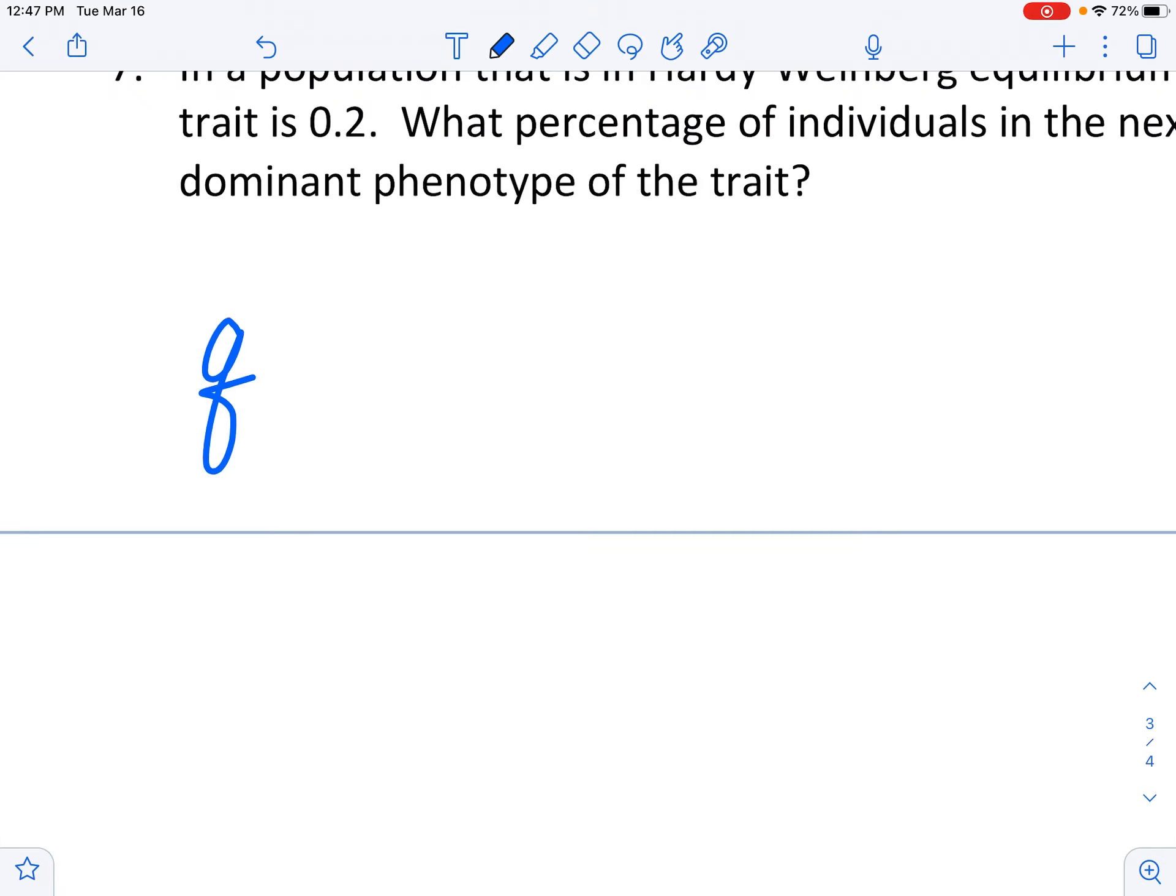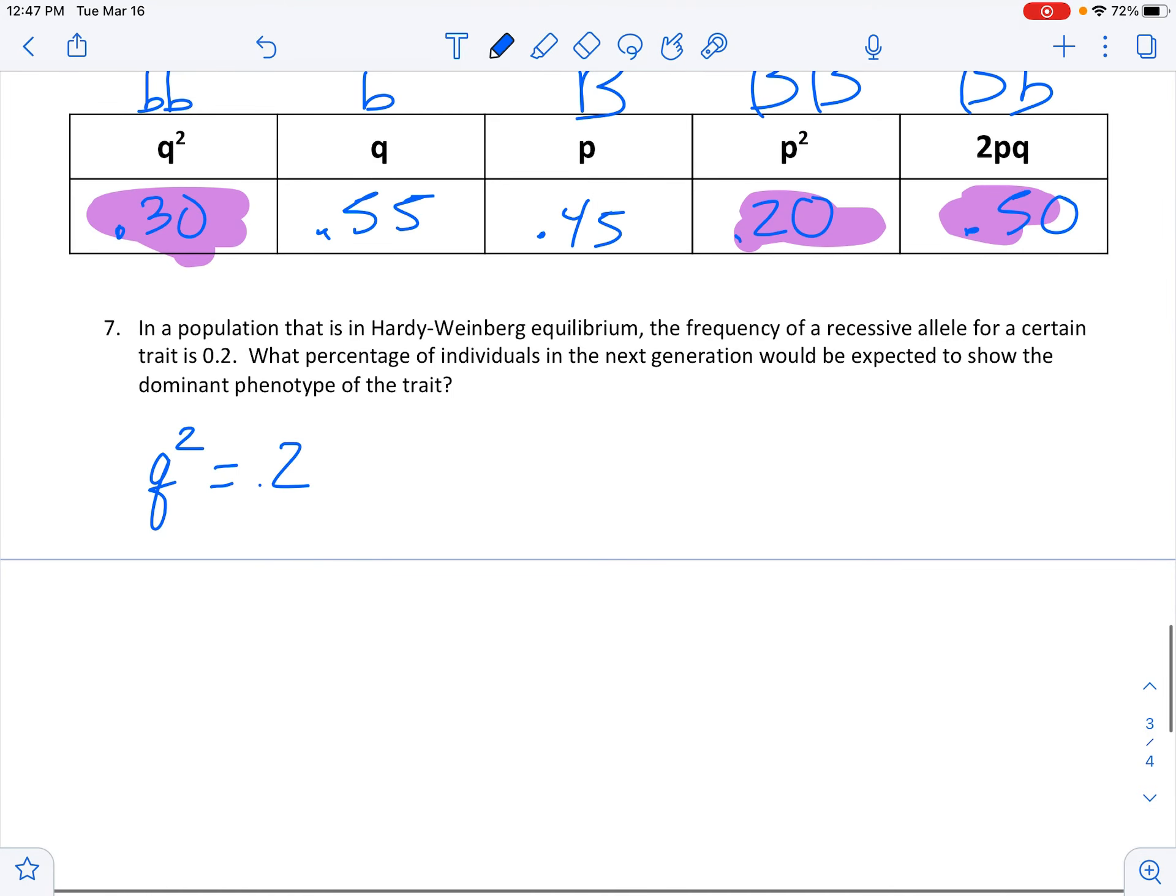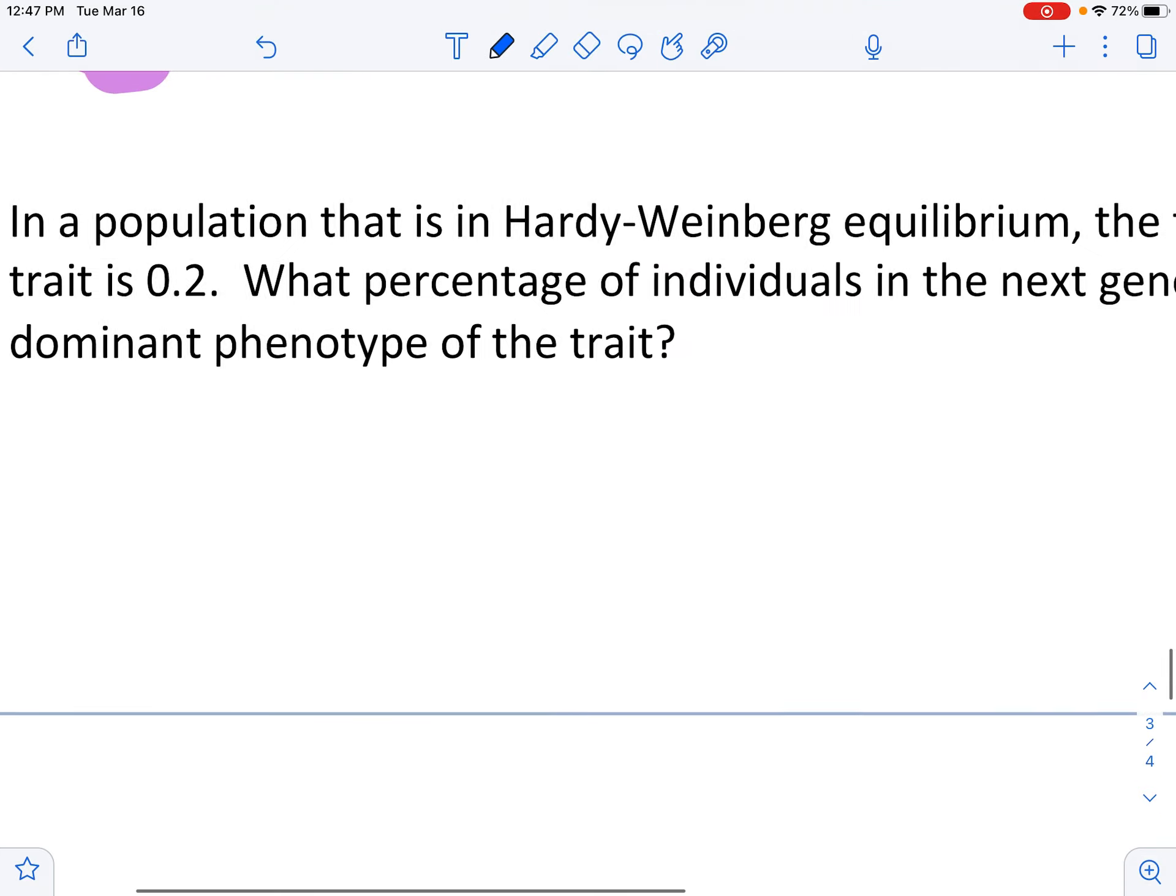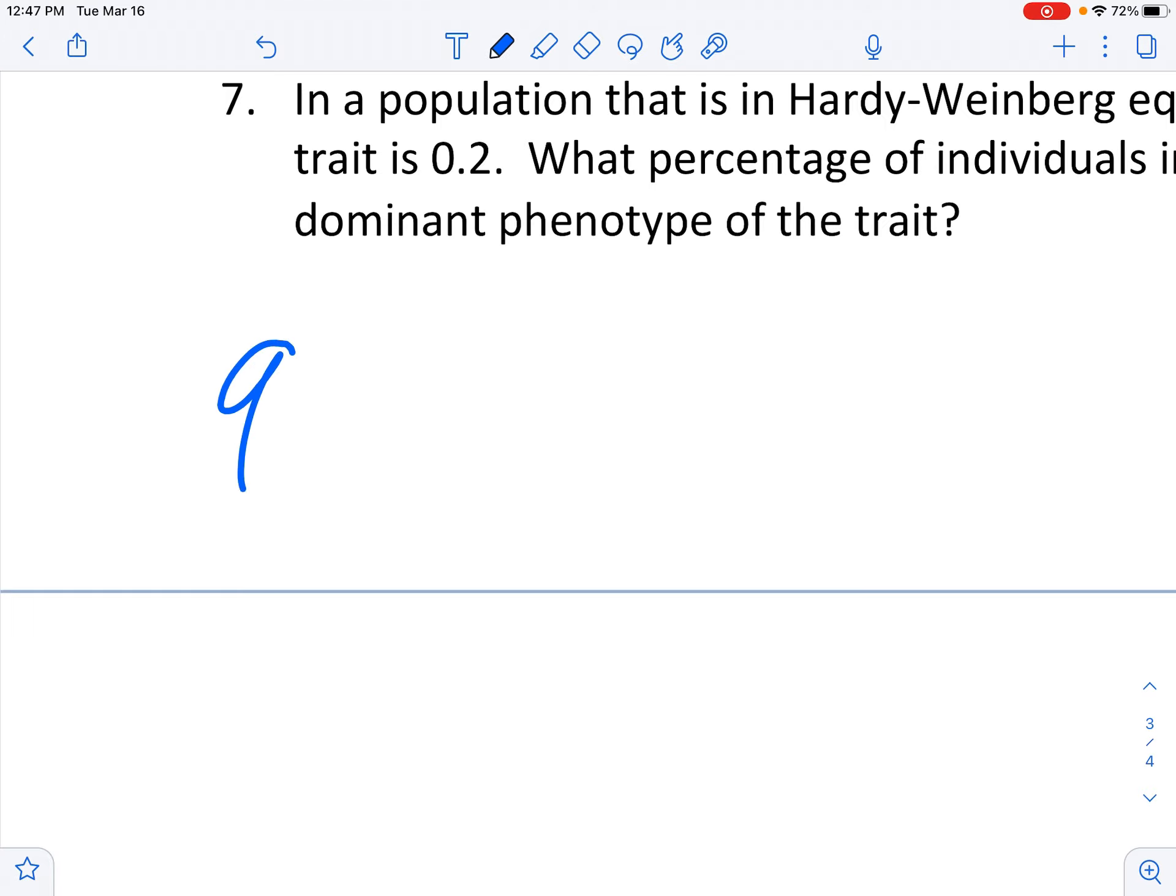So that is telling us that q squared equals 0.2. Oh, nope. The frequency of a recessive allele. I read that wrong. The frequency of a recessive allele. So if we're talking about not the genotype, but just the allele.